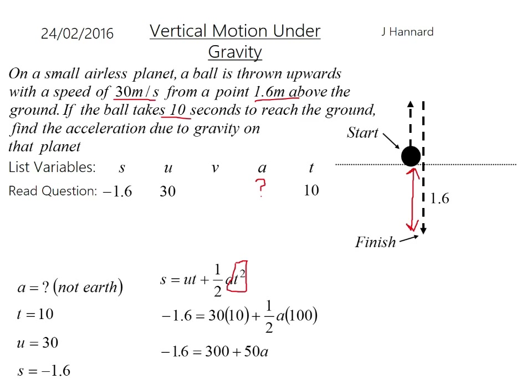So that equals that. Just tidying up there. Could have times throughout by 2, but the half and the 100 cancel nicely to 50. Rearrange. You'll take 300 over the other side and that will make minus 301.6 and then divide both sides by 50. So acceleration on this planet is minus 6.032 meters per second squared. And remember, it's negative because it's acting downwards. Gravity still acts towards the center of this planet, which is good.